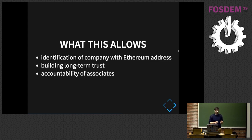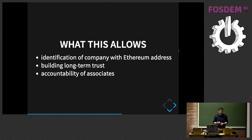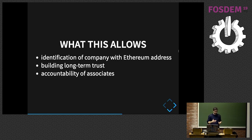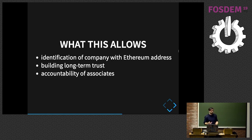This allows identifying companies based on their Ethereum address, and enables two important values of why you want to register and incorporate companies. First, it's building long-term trust: any business you do with this company — if you do good business, you build trust; if you do bad business, you destroy trust. So that's basically a reputation system. Second, it's the accountability of associates: as you can look up who they are based on the company, you can, for example, sue them if something goes wrong.